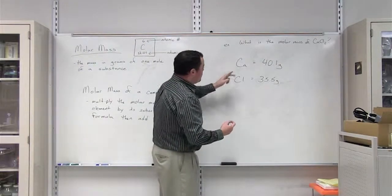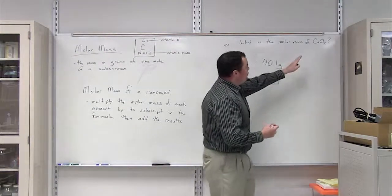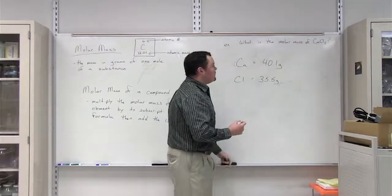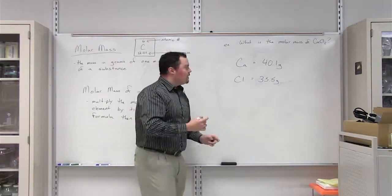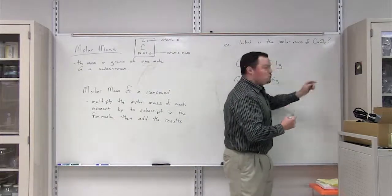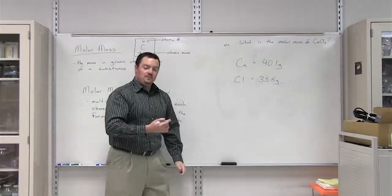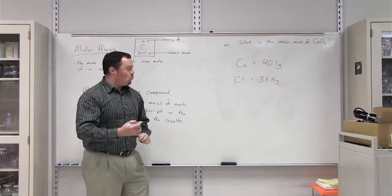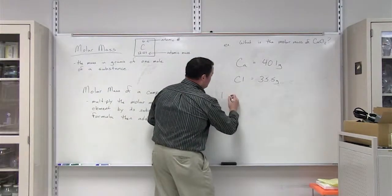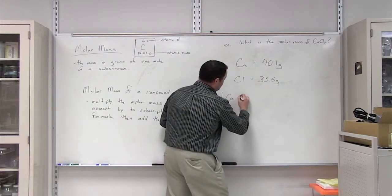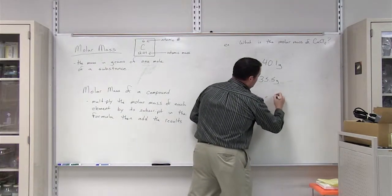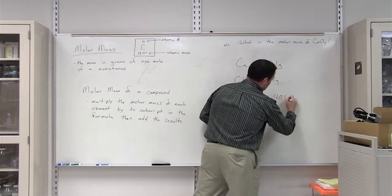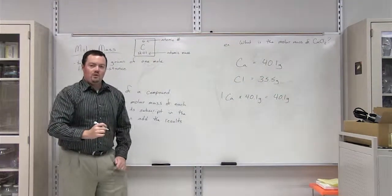In this case, we'll start with calcium. The formula tells us that there's only one calcium in a molecule of calcium chloride. That comes from the fact that there is no subscript next to calcium. No subscript implies that there's one. So one atom of calcium multiplied by 40.1 grams is equal to 40.1 grams.